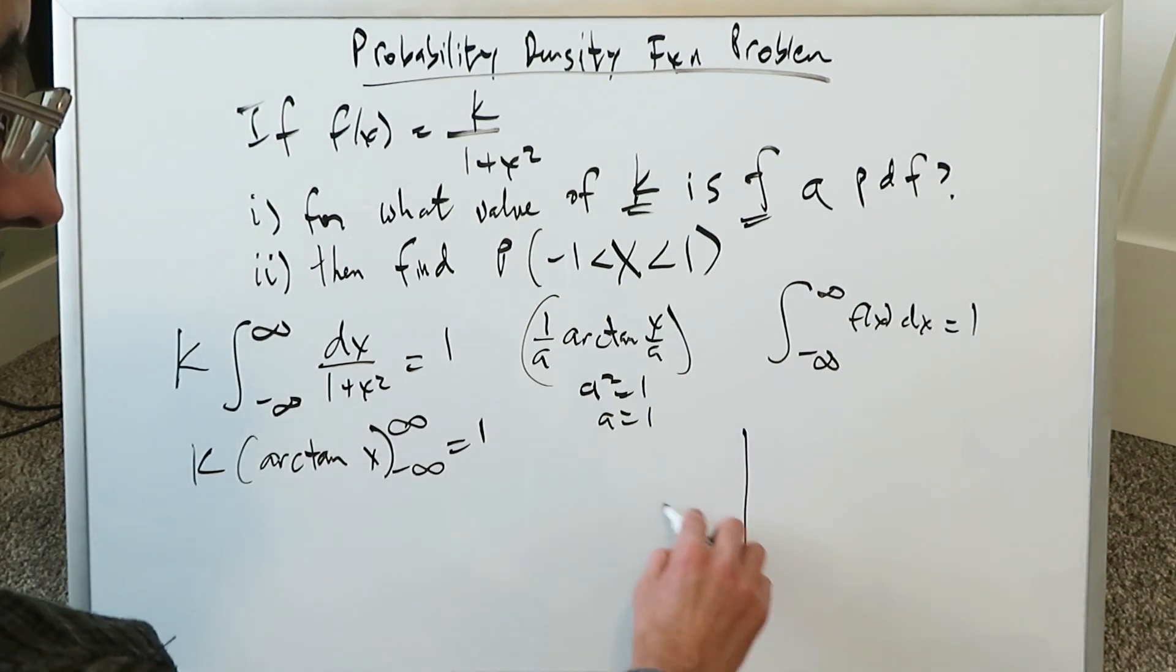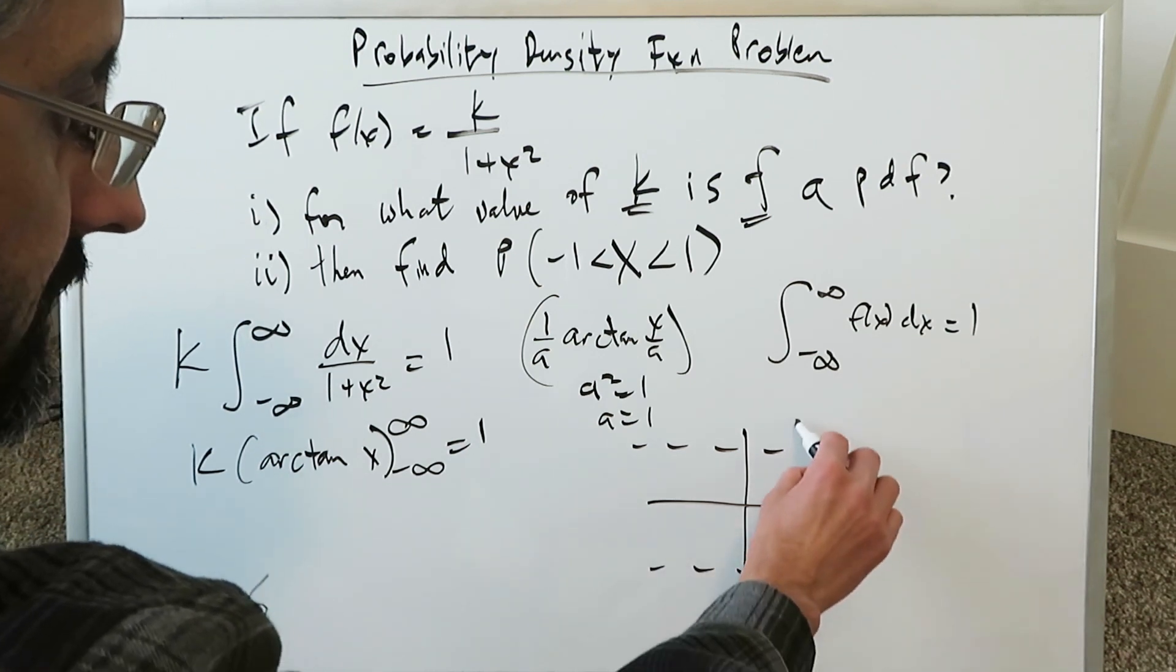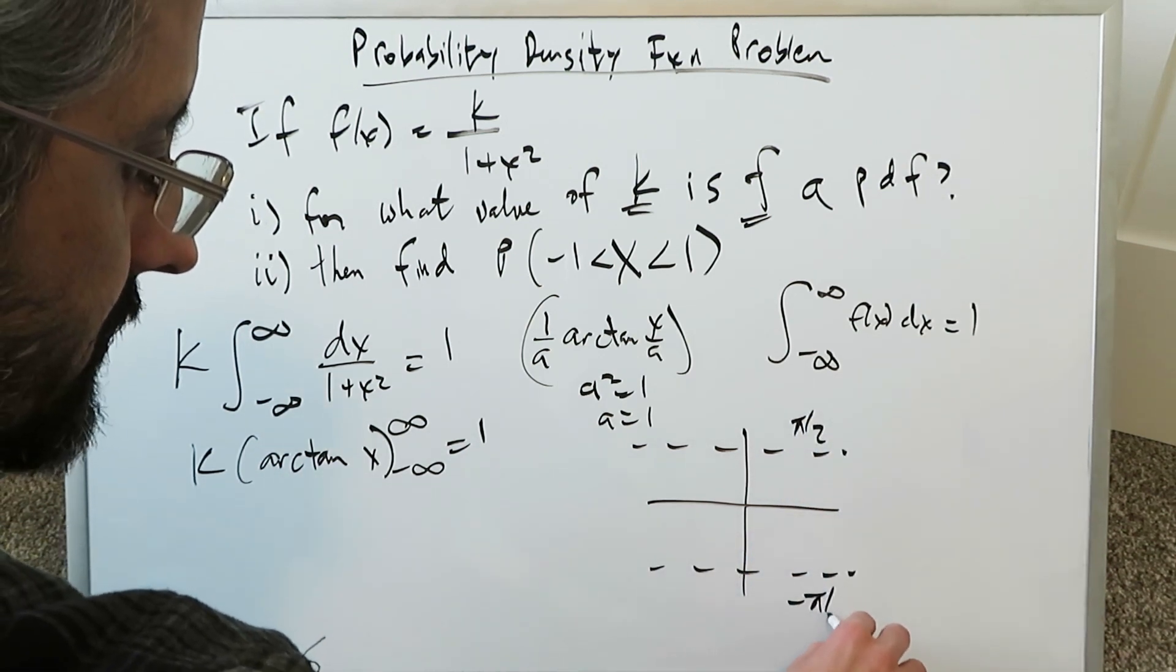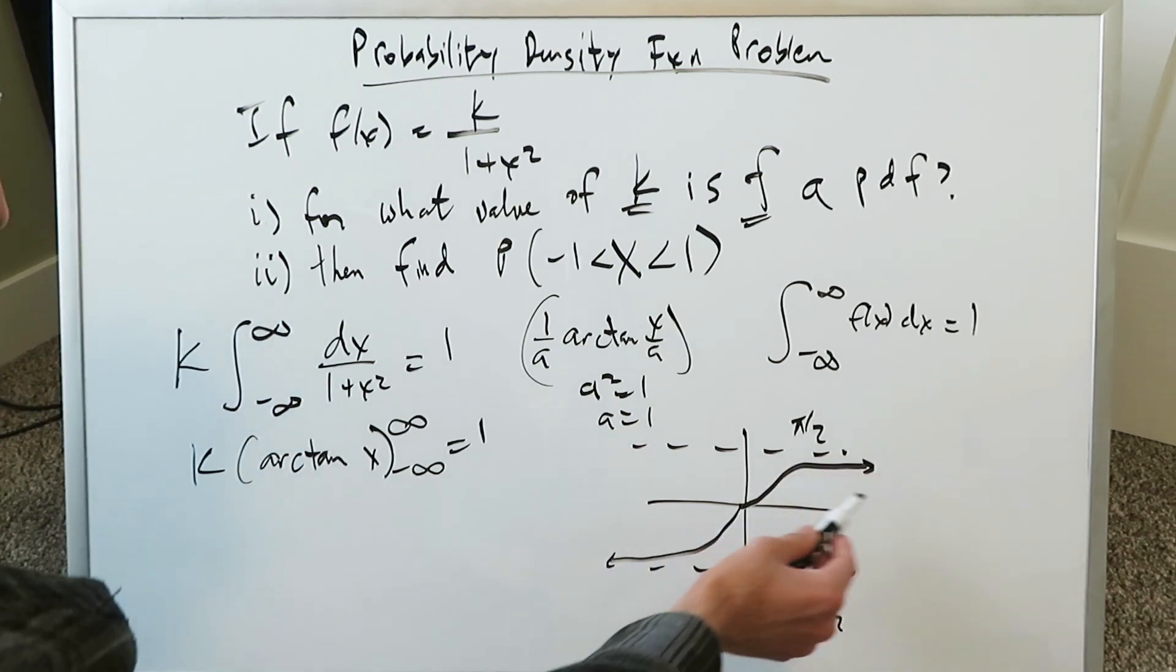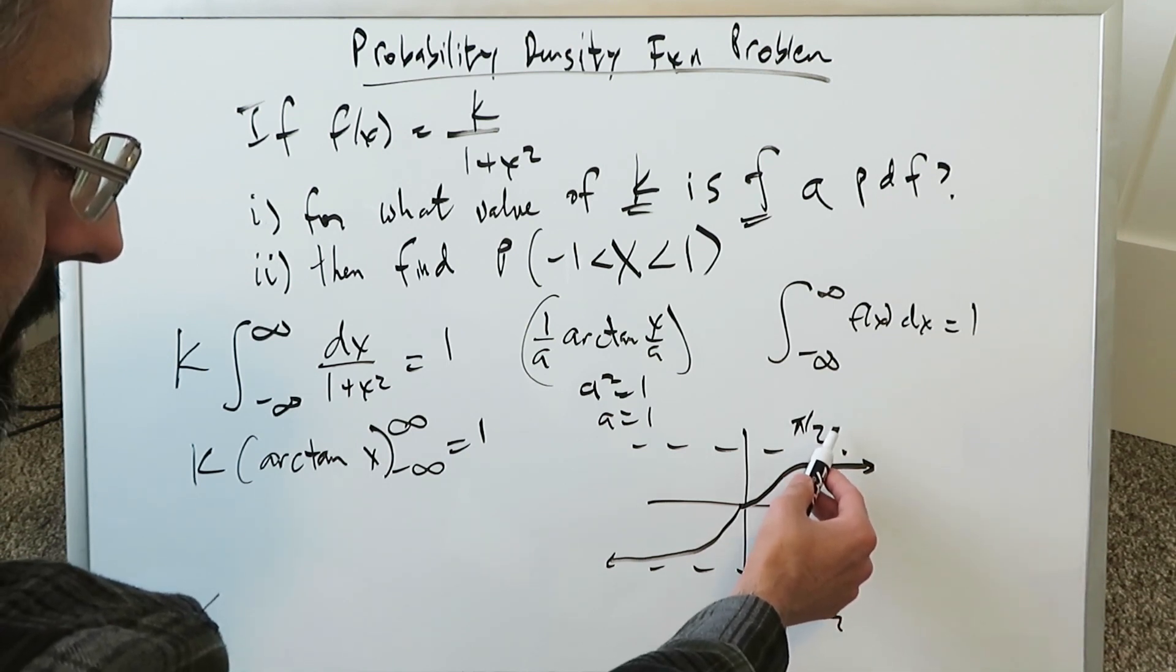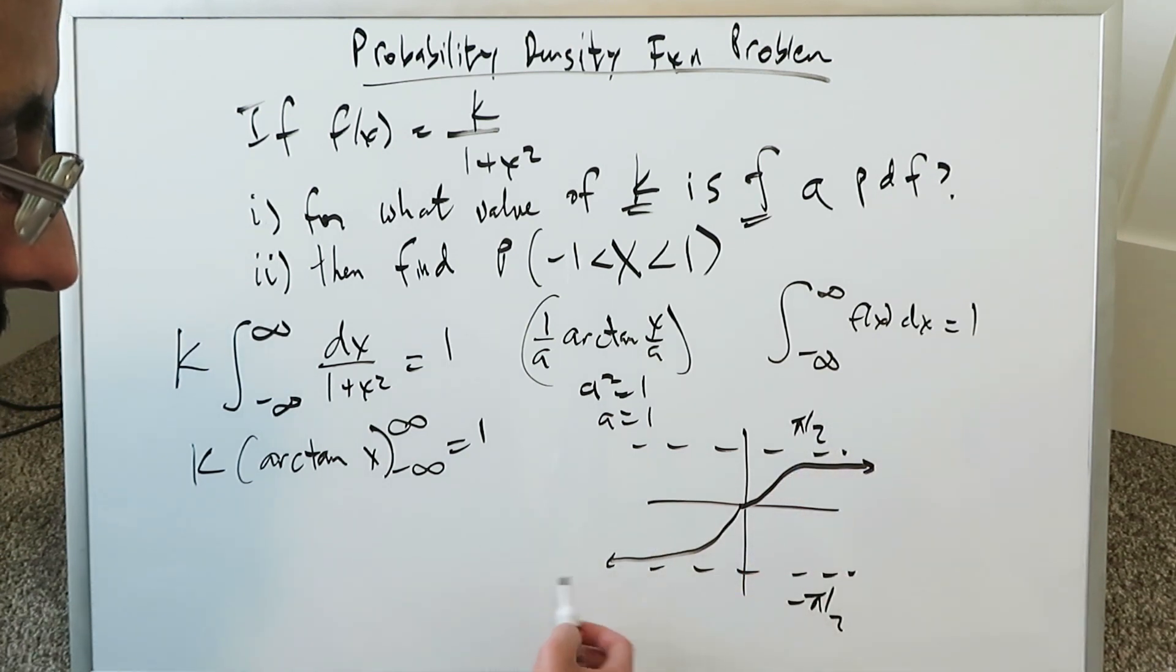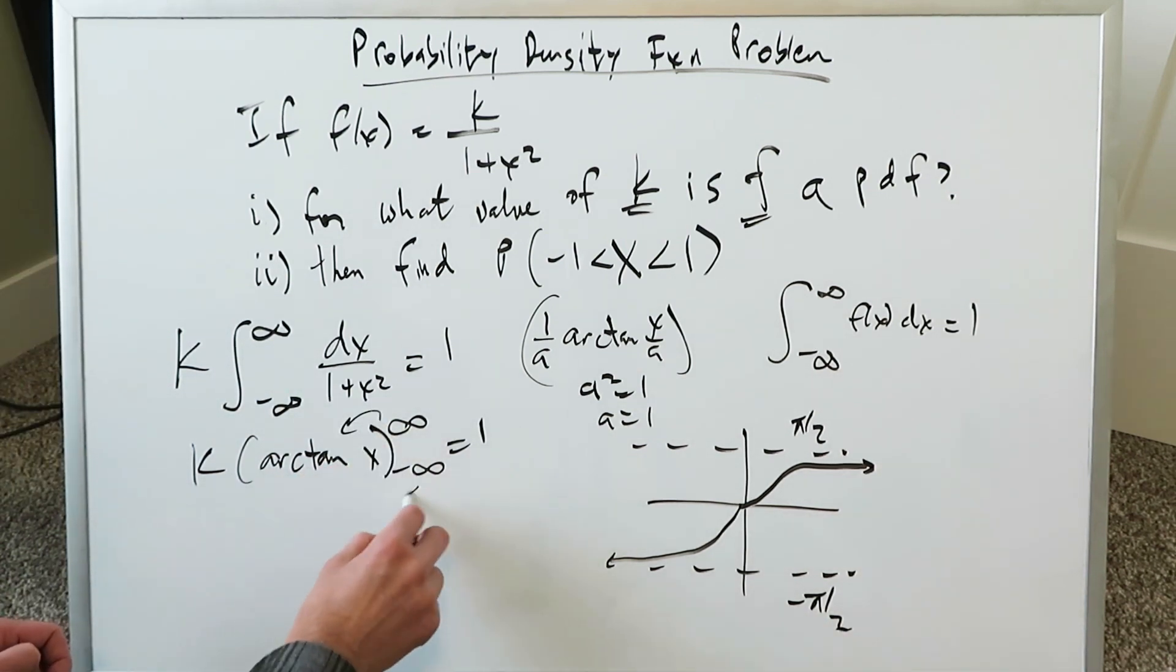You know if you look very easily at the arctan antiderivative graph or you can use a calculator, you have a pi over 2 horizontal asymptote and minus pi over 2. As your x-axis values approach infinity, your function approaches the upper asymptote pi over 2, and likewise down here in the direction of minus infinity, it approaches minus pi over 2. You'll have k times arctan of infinity, which is pi over 2, minus arctan of minus infinity, which is minus pi over 2, equal to 1.